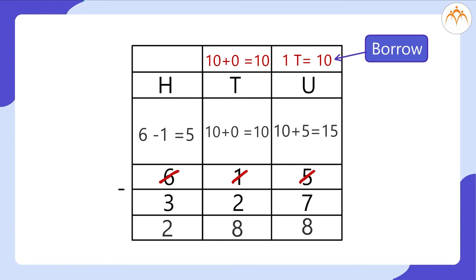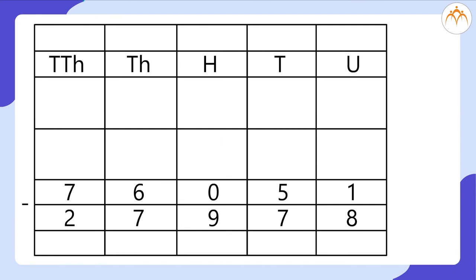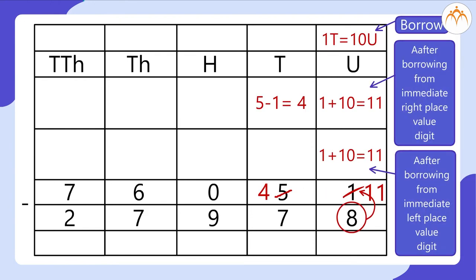Let's take another example: 76,051 minus 27,978. Step 1: We cannot subtract 8 from 1, so we borrow 1 from the tens place. We get 11 for the units digit. The subtraction gives 3, so the units place of the difference is 3. We have completed the procedure for the units place and will now repeat the same procedure for the tens place.